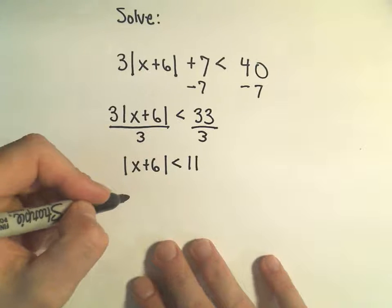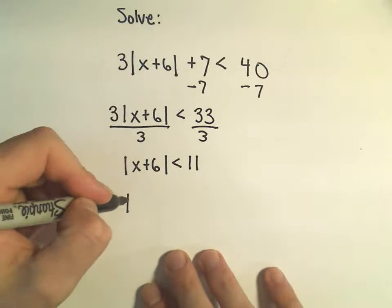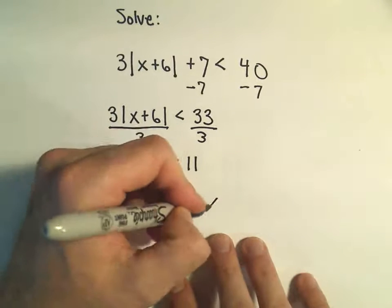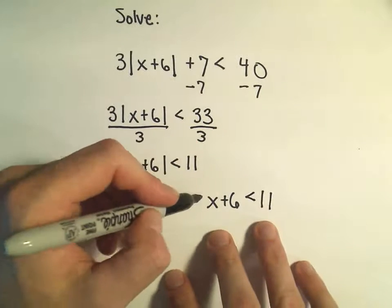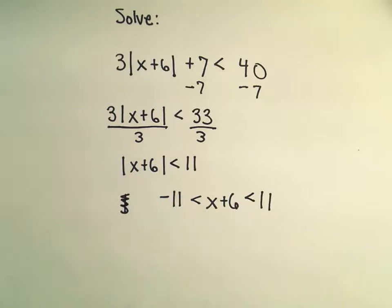And again, now the same thing. For this type of inequality, I just remove the absolute value and then I say it's less than positive 11 but greater than negative 11.